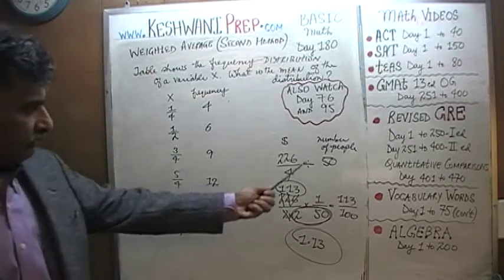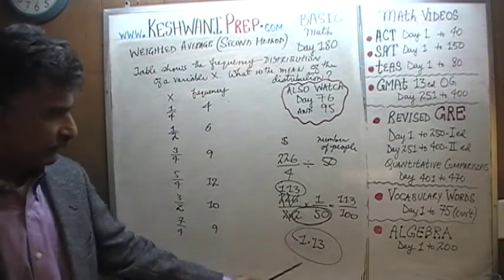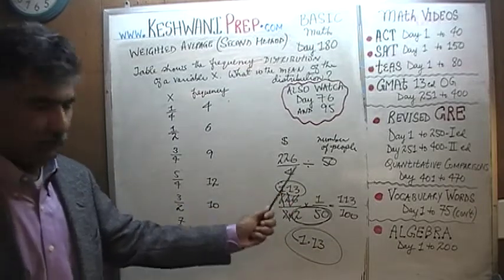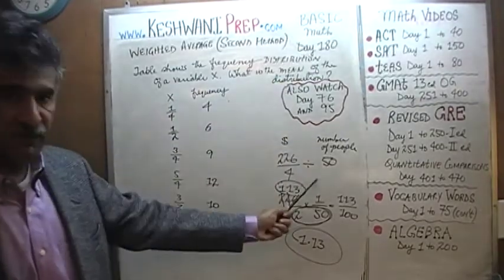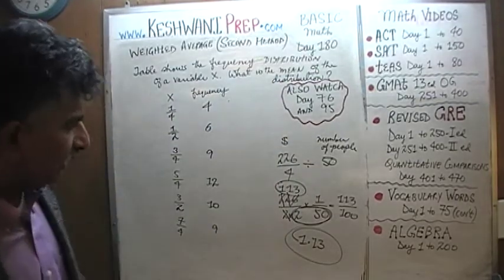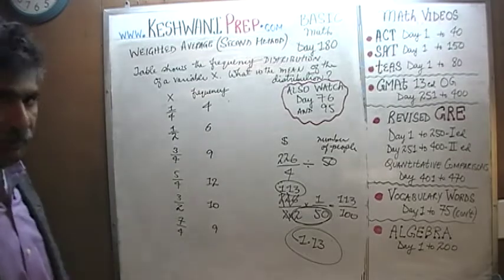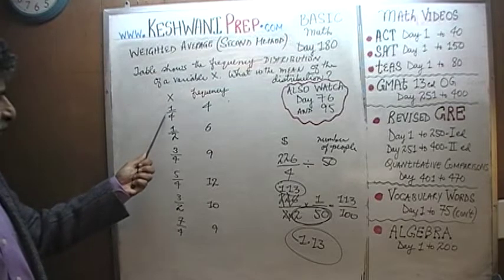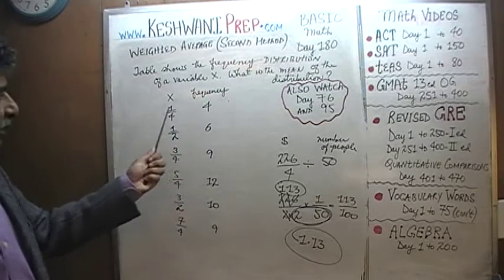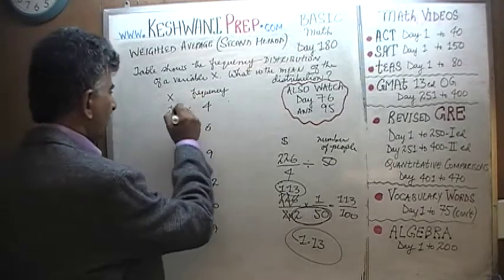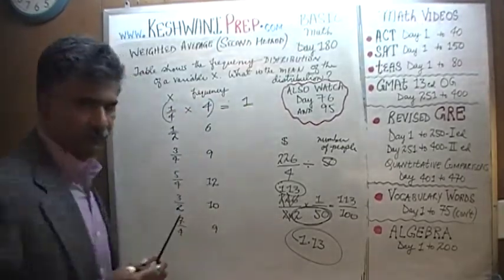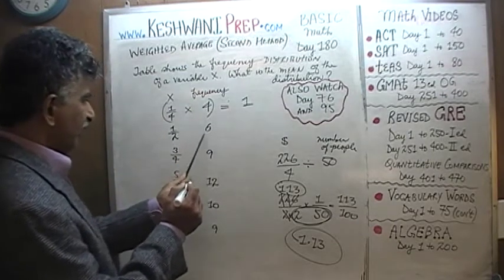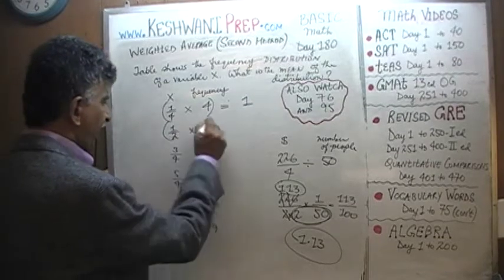Here is the frequency distribution. The work you see is from yesterday — it's a different method, which is why it has a dollar sign and number of people. Today we are not going to do any of that. We are just going to do it in a very traditional way. We have variable x which takes the value of one quarter four times. Four times one quarter is simply one.